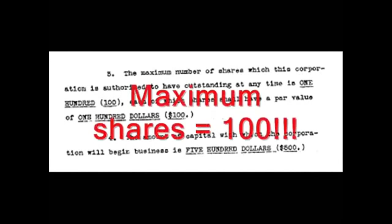Number 3: The maximum number of shares which this corporation is authorized to have outstanding at any one time is 100, each of which shares shall have a par value of $100. Number 4: The amount of capital with which the corporation will begin business is $500. Number 5: The corporation is to have perpetual existence. Number 6: The principal office of the corporation shall be located in the Centennial Building, Tallahassee, Leon County. Number 7: The number of directors shall be three. Number 8: The names of the directors who shall hold office for the first year of the corporation's existence, and their post office addresses, are as follows.